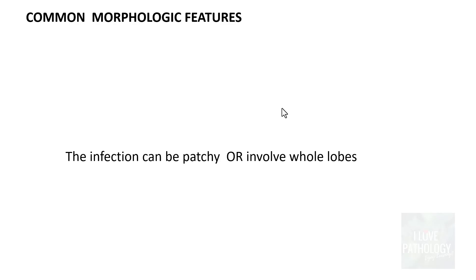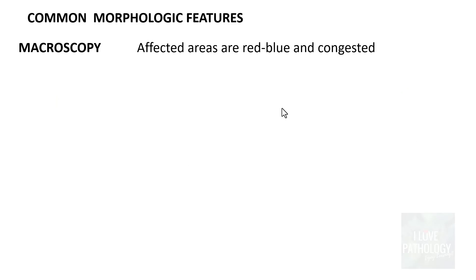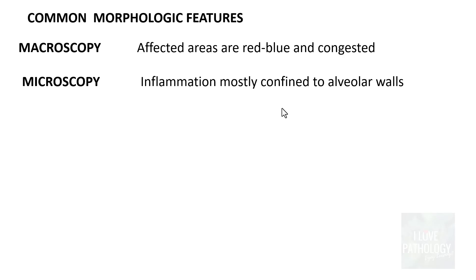The common morphological features: when viral infection extends into the lung, viral pneumonias can be patchy or involve whole lobes — similar to lobar and lobular pneumonias we studied in bacterial pneumonias. They can be unilateral or bilateral. On macroscopic examination, the affected areas are often red, blue, and congested.